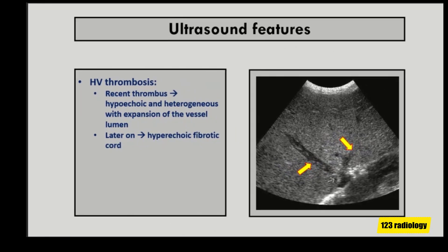Hepatic vein thrombosis can be total or partial, focal or extensive, and may involve one or more hepatic veins. On ultrasound, acute thrombosis is hypoechoic and associated with expansion of the vessel lumen. On color Doppler ultrasound, no flow is seen in the thrombosed segment.